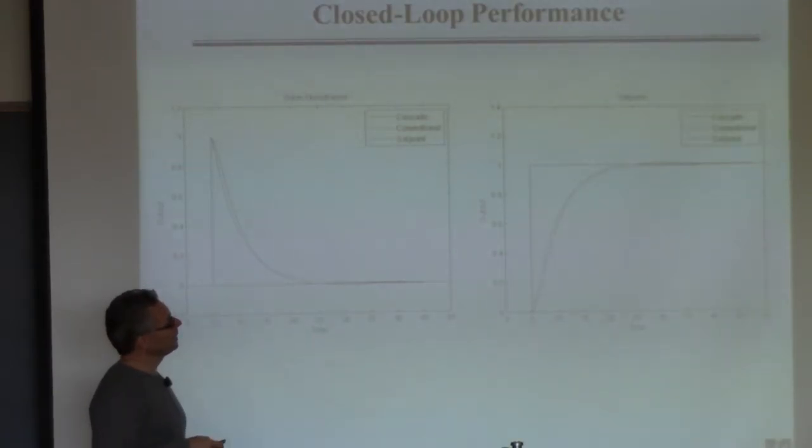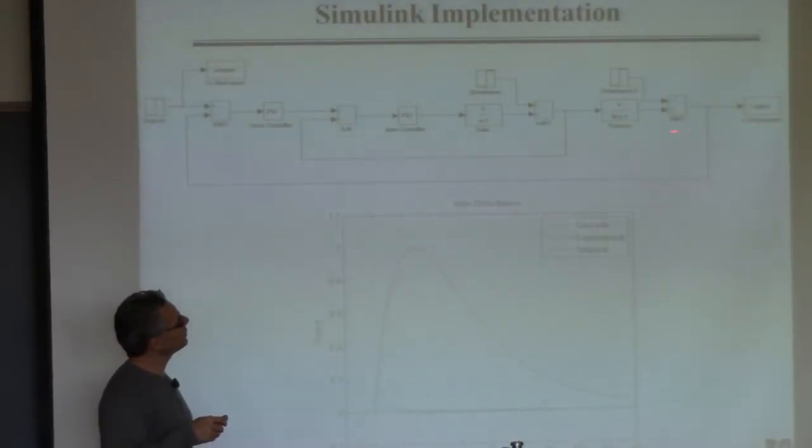So it's just critical to understand that this whole idea of cascade control is meant to reject disturbances you cannot measure that come into this inner loop. It doesn't help with anything else.